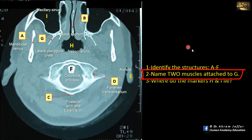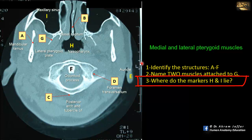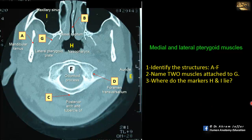Name two muscles attached to G. G is the lateral pterygoid plate, and it is sandwiched between the medial and lateral pterygoid muscles. Where do markers H and I lie? I is the maxillary sinus, and H is the nasopharynx.